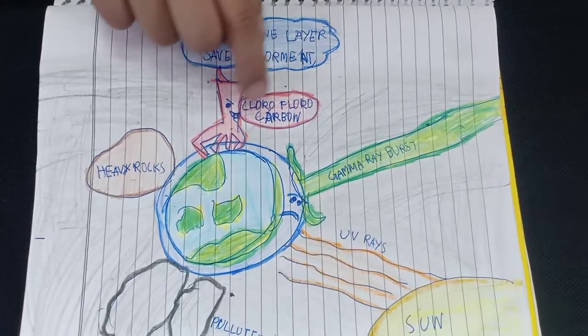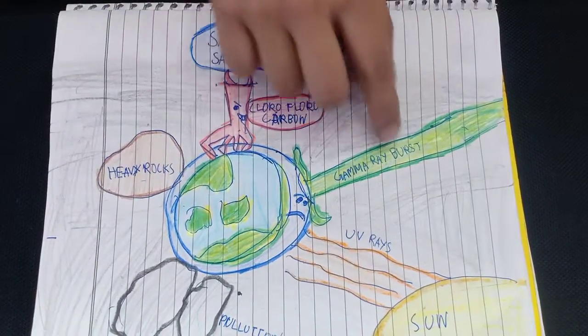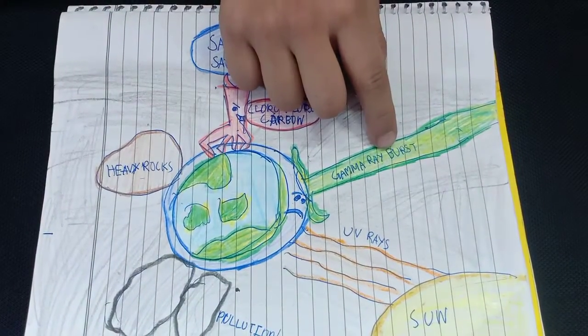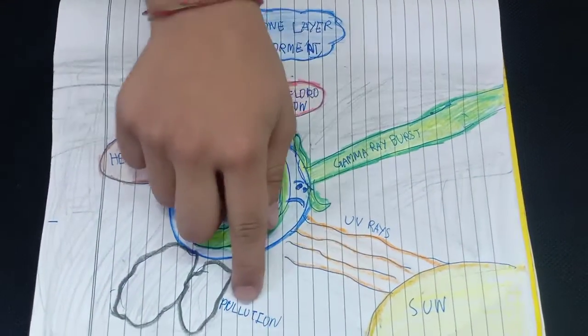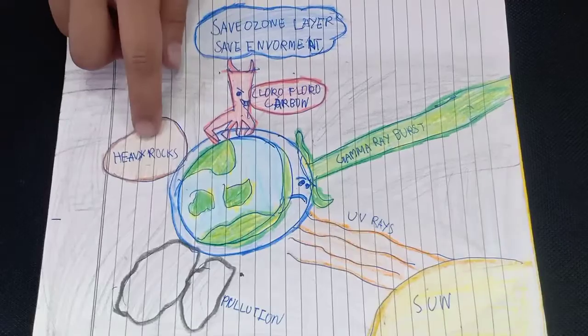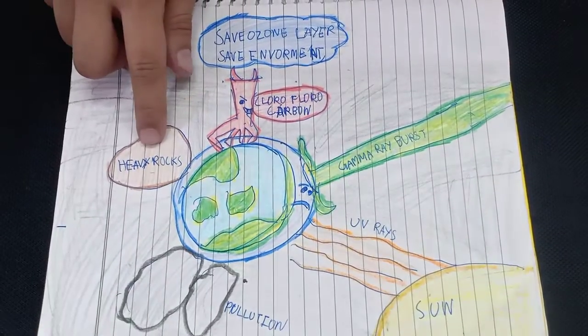But some things are damaging the ozone layer. Let's see through the map. Chlorofluorocarbon, gamma ray burst, UV rays, pollution, and heavy rocks.